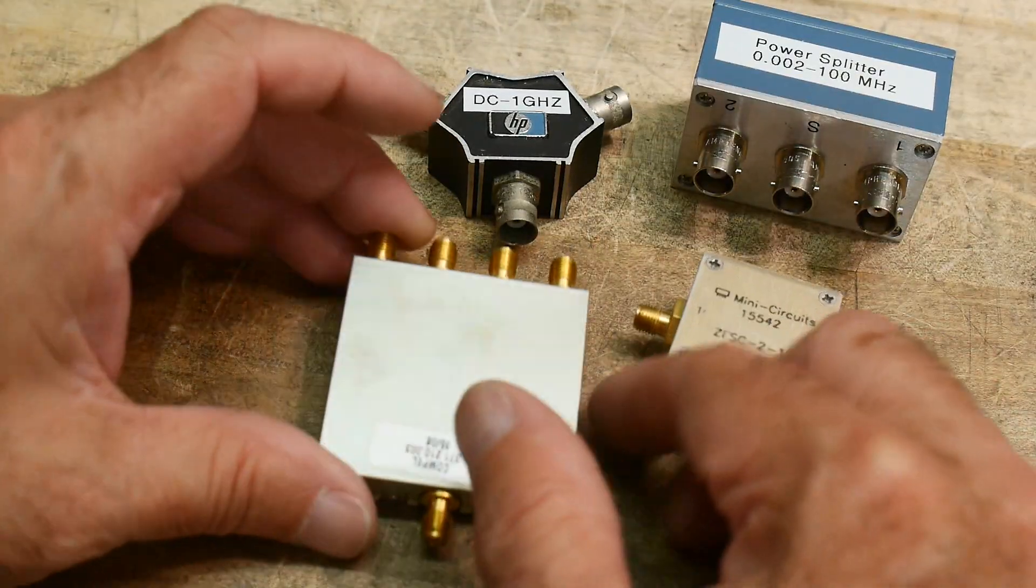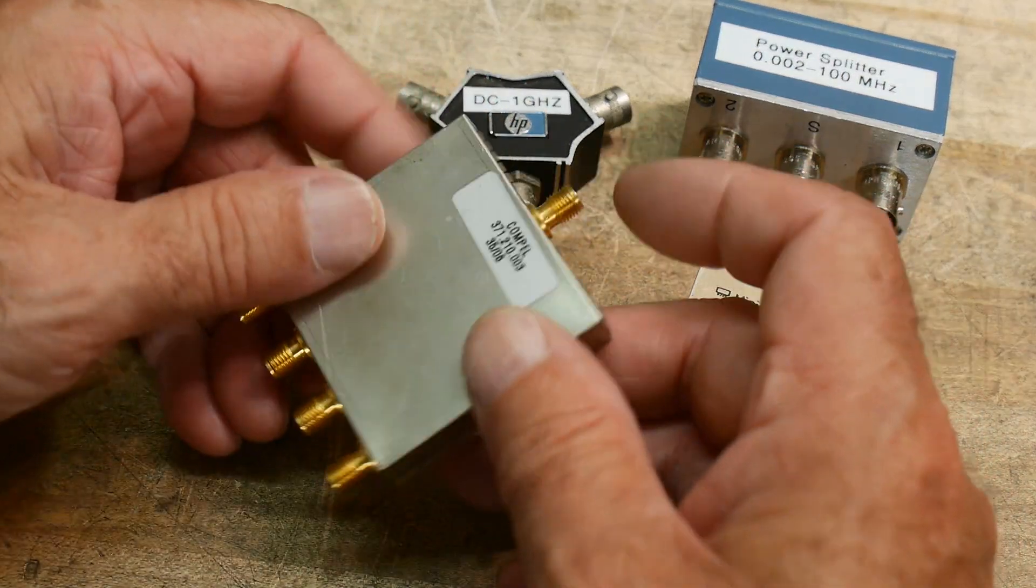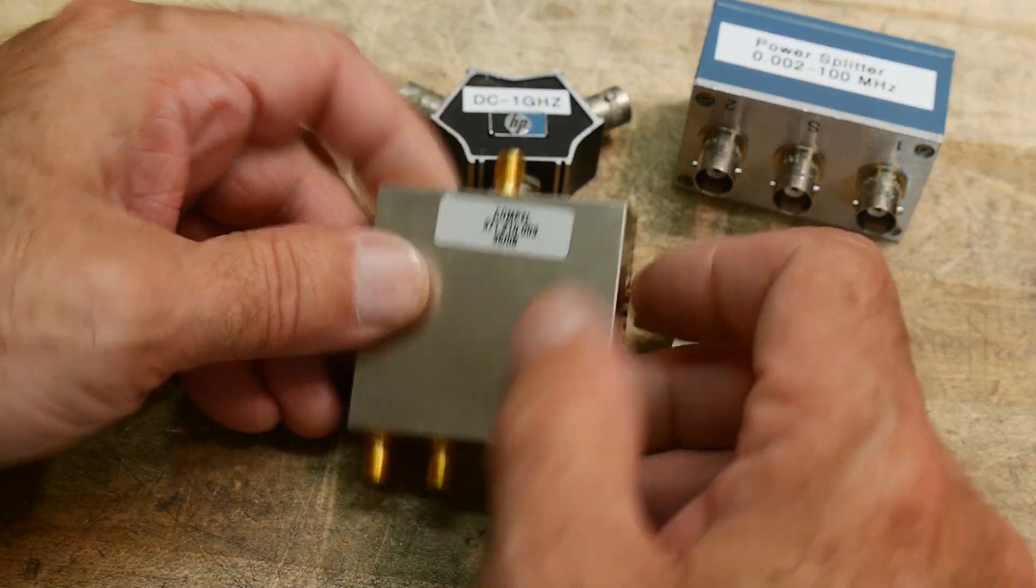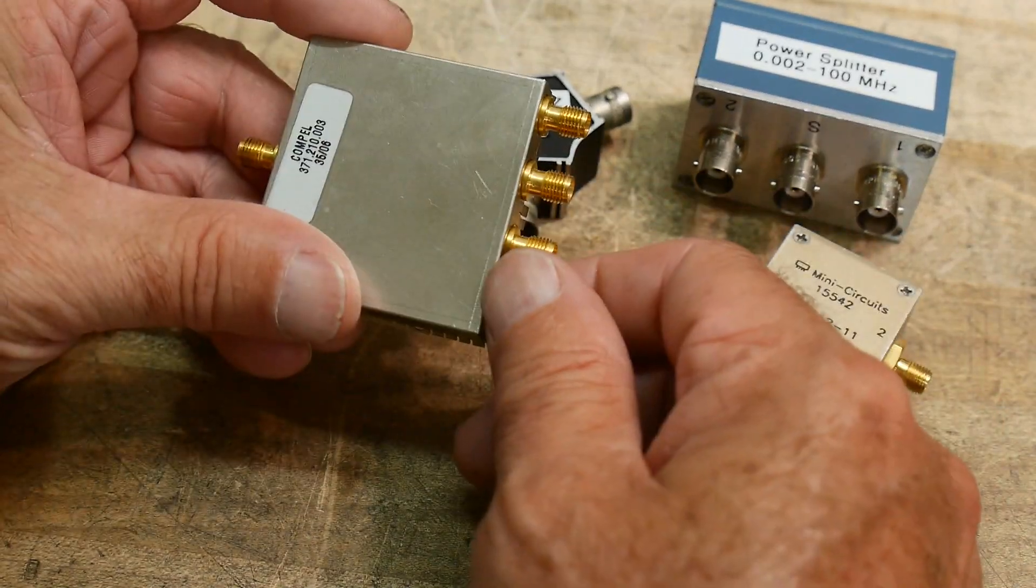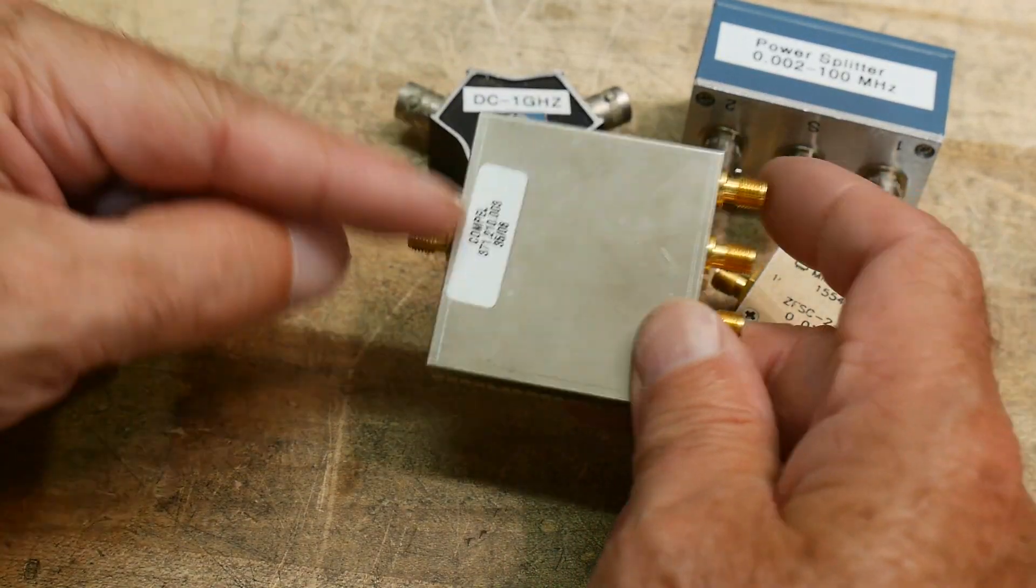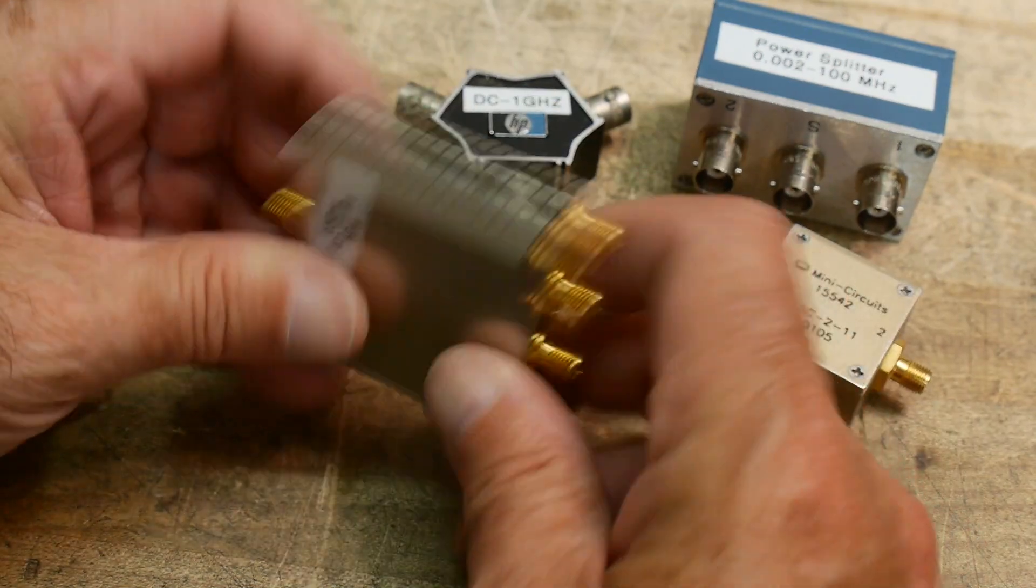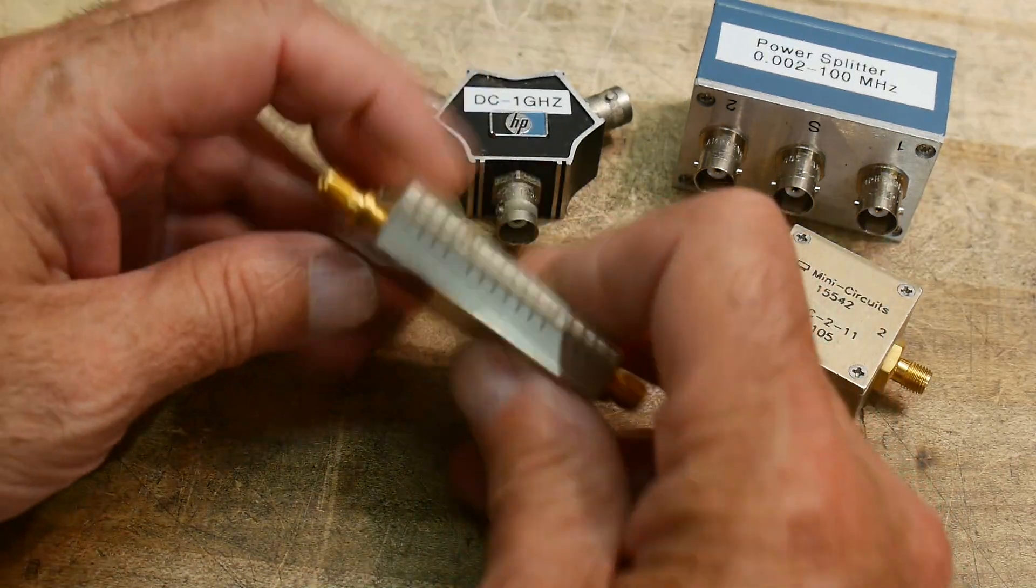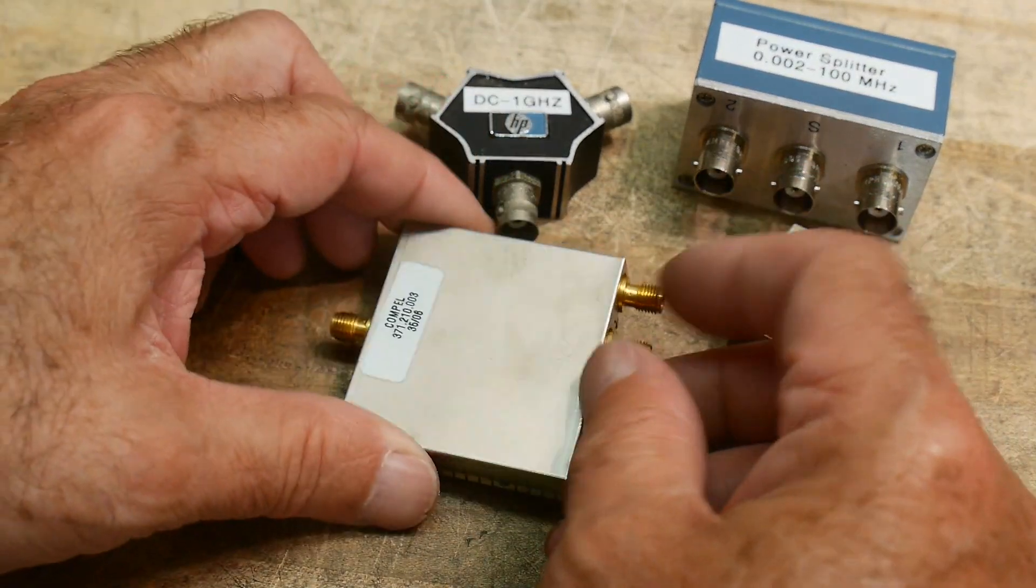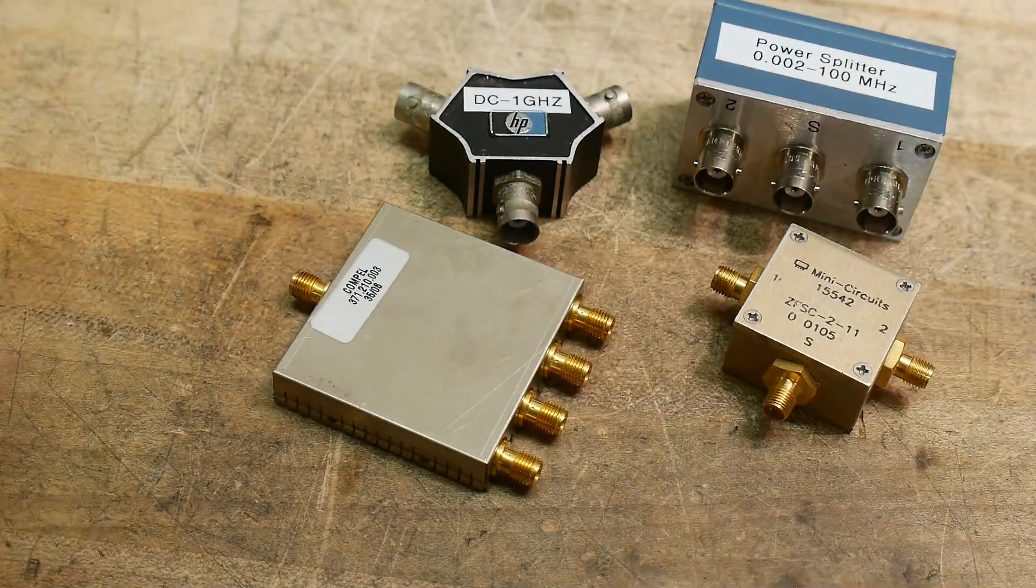Mini Circuits, these two are Mini Circuits and this is sent in by a viewer. This one is a Compel and nice thing about this one is it has four outputs, so one in, four out. And yeah, so I don't know anything about this, we'll have to see what frequency range it might have and see if it works. So let's hook it up and make some measurements.